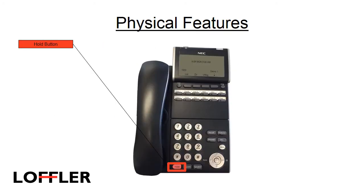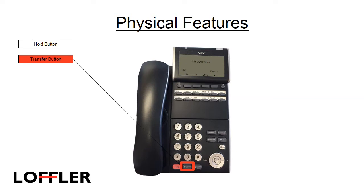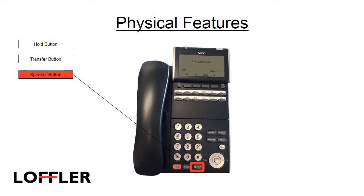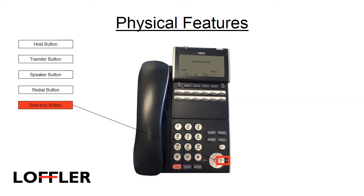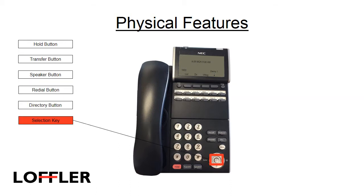We will start by going over the physical features of the phone. The hold button puts internal and external calls on hold. The transfer button allows you to transfer a call to a co-worker or an outside line. To make a hands-free call, press the speaker button to get a dial tone. To redial the last person you called, press the redial button on the navigation key. The directory button shows a list of contacts within your company. The selection key in the center of the navigation key is a way to press enter on your phone.